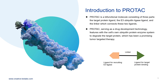PROTAC, full name Proteolysis Targeting Chimera, was first put forward by Professor Craig Cruz and his collaborators in 2001. With the development of protein drugs, the research and development of PROTAC continues to heat up. PROTAC is a bifunctional molecule consisting of three parts shown on the right: the target protein ligand, the E3 ubiquitin ligase ligand, and the linker which connects these two ligands.